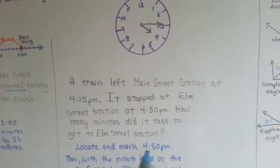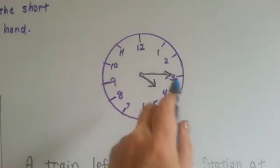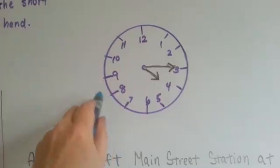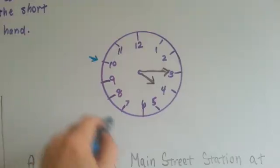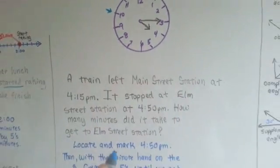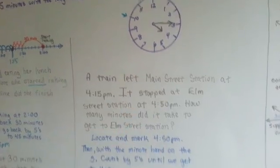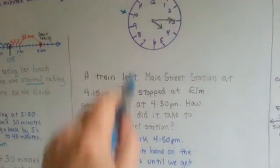Well, the first thing we do is locate and mark 4:50 p.m. It's at 4:15, 4:20, 4:25, 4:30, 35, 40, 45. The minute hand would be pointing here. So that is where we need to count to. So now we're going to count by fives until we get to that mark.